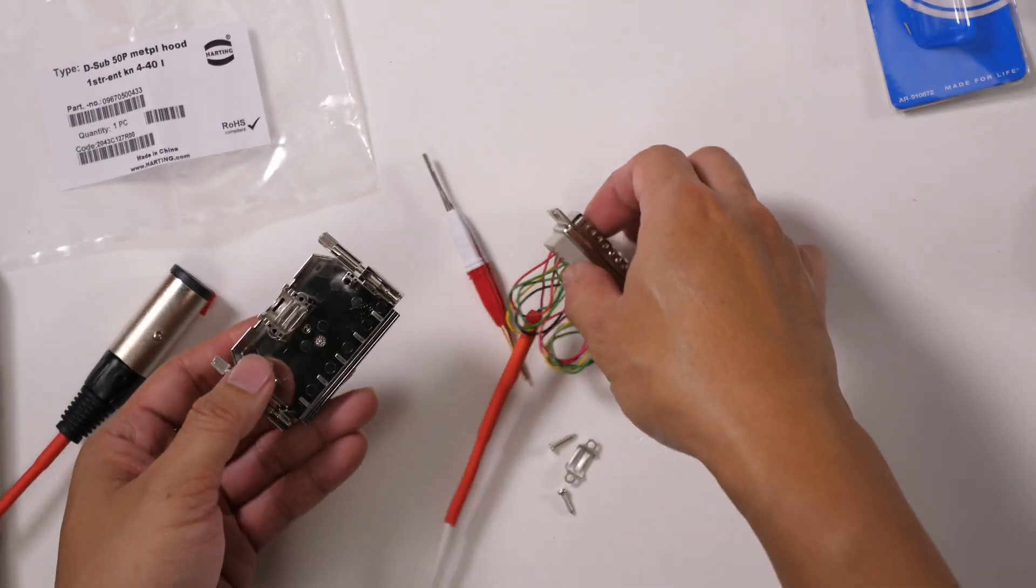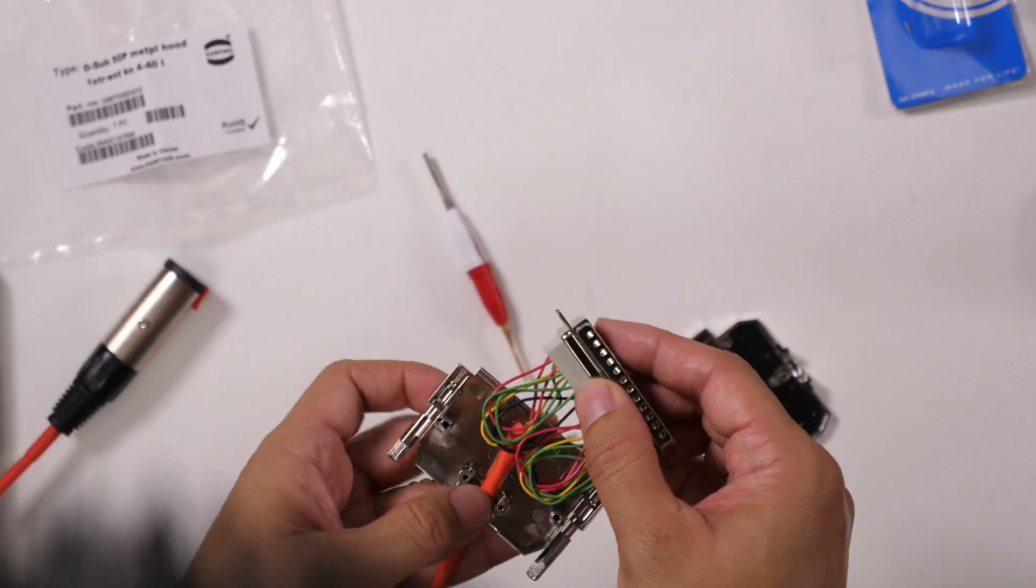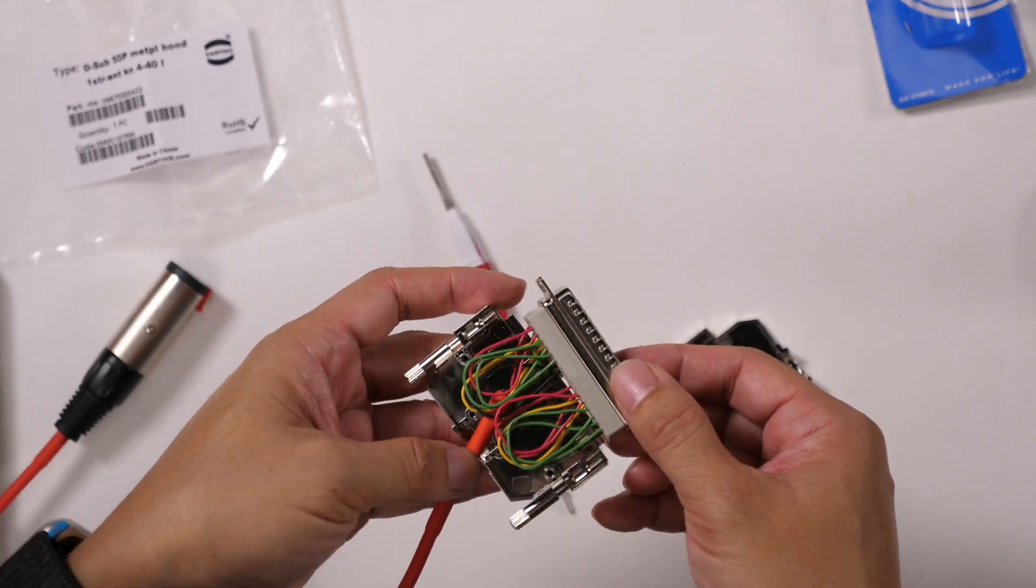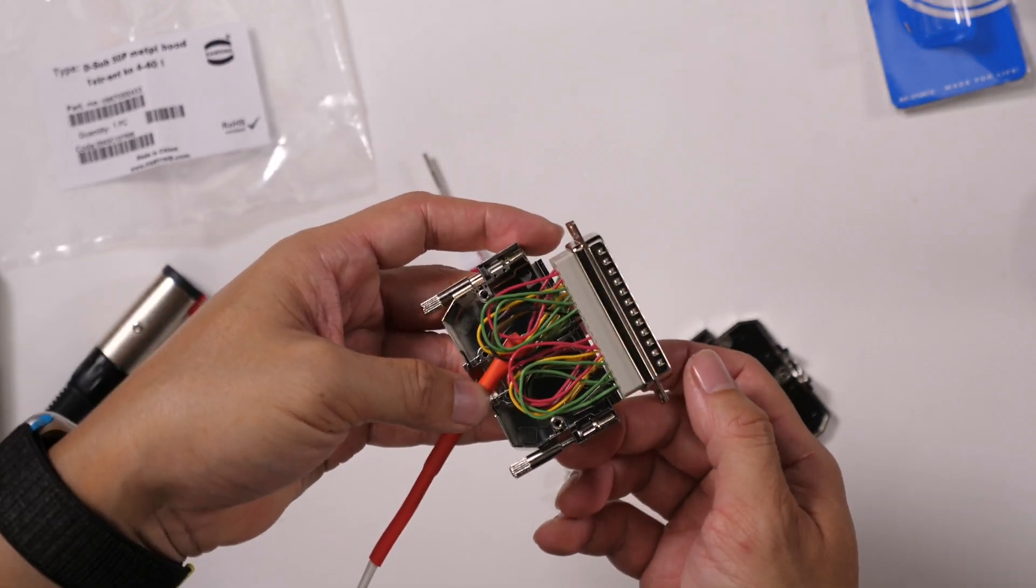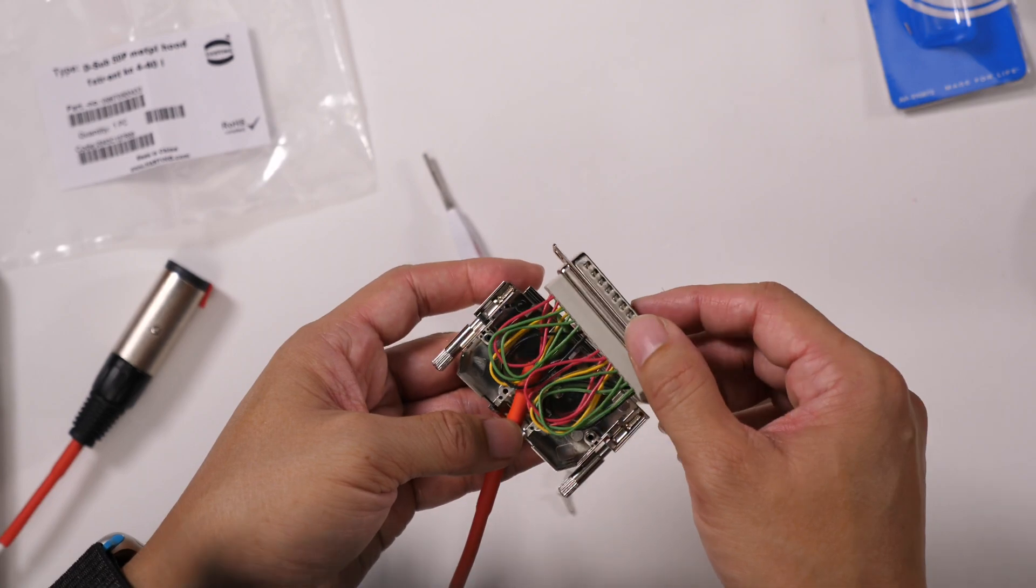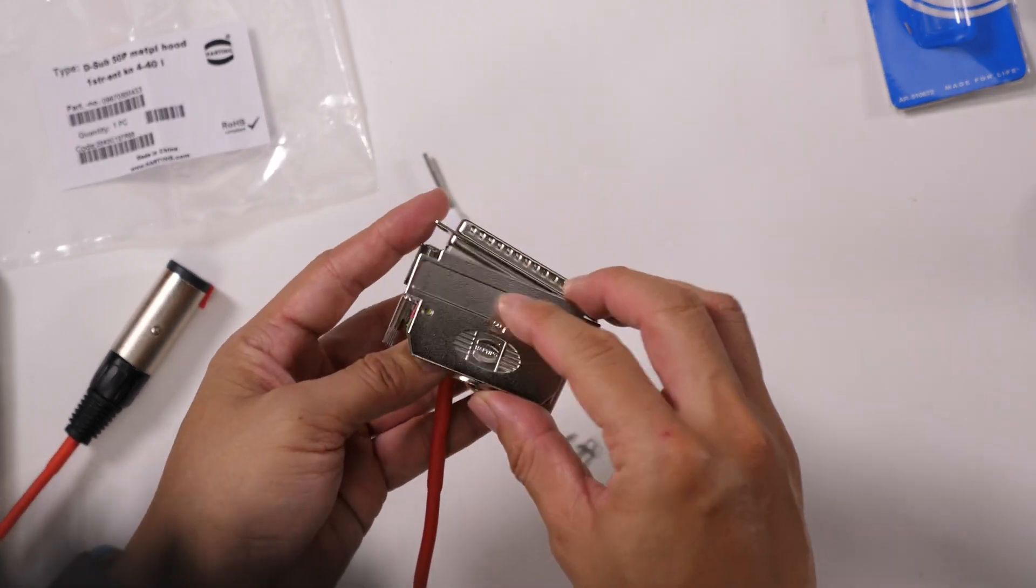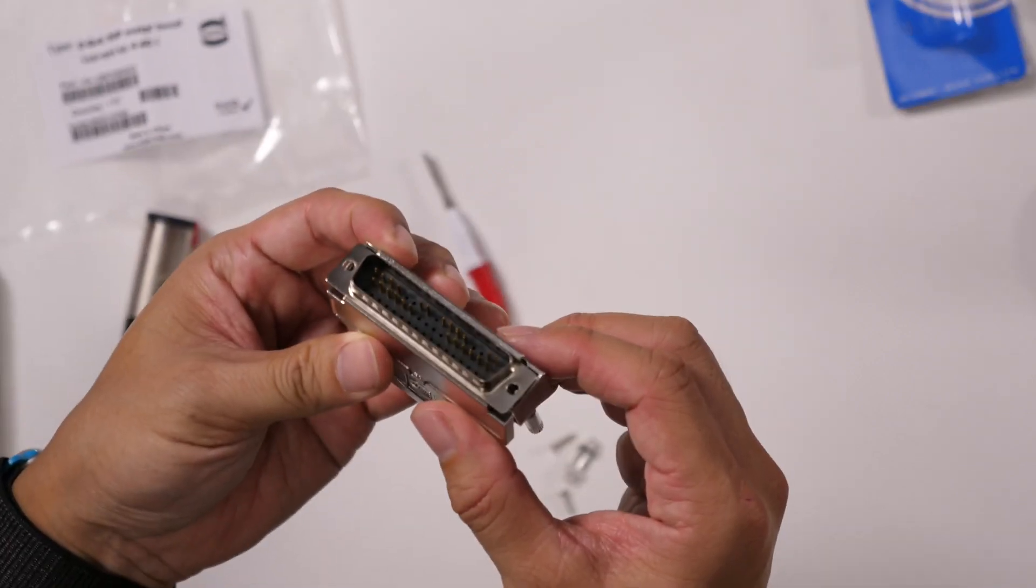Now this is going to go into this bit here, and it looks like I might need to bend some of the wires in order to make it fit. But this is then going to close up on top of that, then we will have our interface like that.